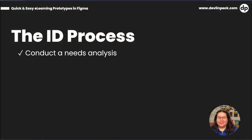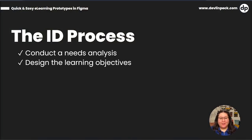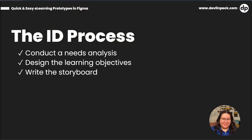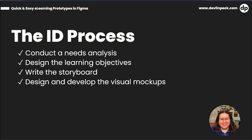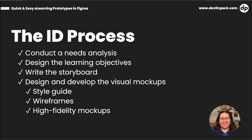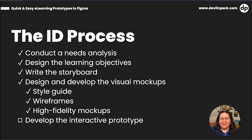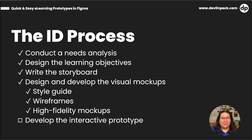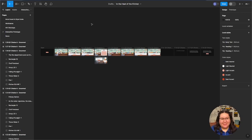First we conduct needs analysis. Then we wrote our learning objectives and wrote our storyboard — that happened before the series started. At the end of the series, we started talking about the visuals. Together we built a style guide for consistency, we built out some wireframes to talk about layouts, and last time we built high fidelity mockups to see what the final product is going to look like. And now we're ready to develop an interactive prototype to feel what that product is going to be like. So let's go ahead and jump into Figma and get started.